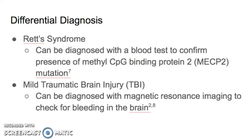Cerebral palsy is usually diagnosed early on within the first two years of a child's life. The damage in the children's brain could be from some complication with pregnancy, such as the mother acquiring an infection, or a traumatic brain injury during labor or shortly after birth. Rett syndrome is a genetic mutation affecting brain development that presents with similar signs and symptoms, such as stiff muscles, loss of coordination, and speech difficulties. A blood test can be used to confirm the presence of the MECP2 mutation, which is an X-linked gene mutation present in Rett syndrome but not in CP.